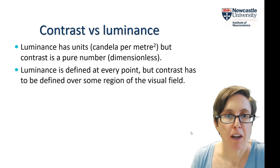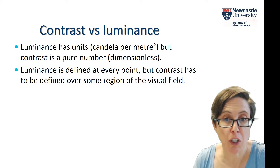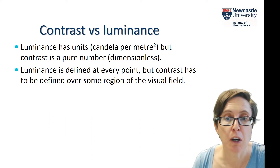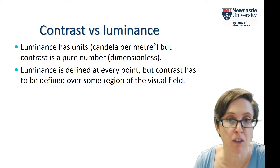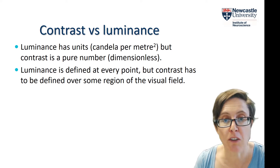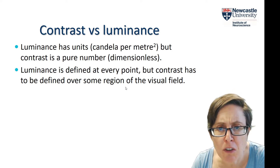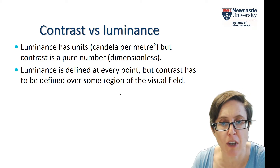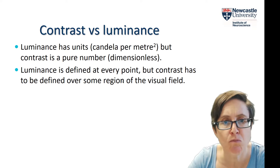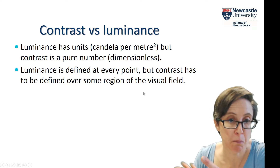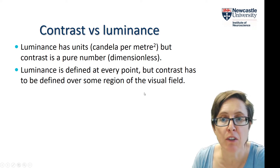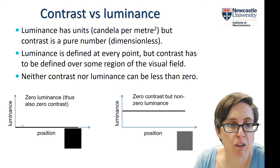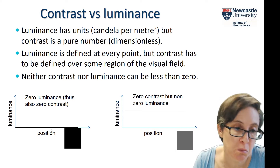To bring out the differences between contrast and luminance: luminance has units such as candela per metre squared, but contrast is a pure dimensionless number — it's the ratio of two quantities with dimensions of luminance, so the dimensions cancel. Luminance is in principle defined at every point, but contrast must be defined over at least some region of the visual field, since you need a maximum and minimum luminance within that region. Also, luminance must be positive or zero — you can't have negative luminance — and with zero luminance everywhere you also have zero contrast.